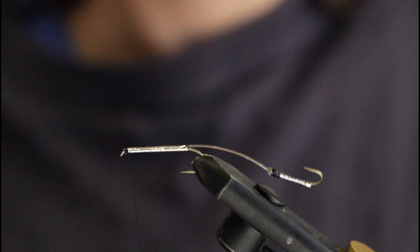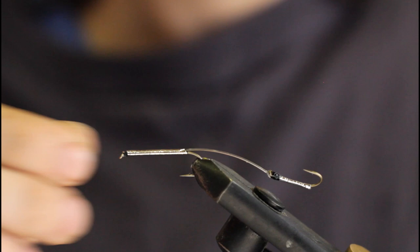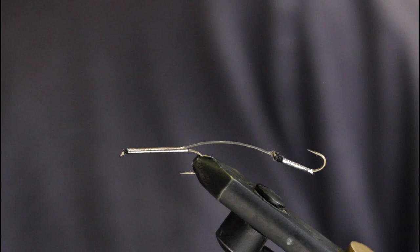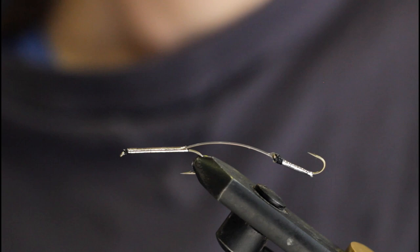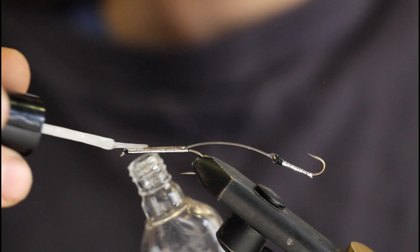Grab my whip finish tool and that's it for the body. Now I'm going to snip this off because I'm done with it for now. I'm going to adjust the orientation a little bit here. Looks okay.